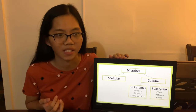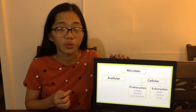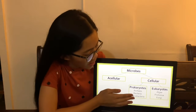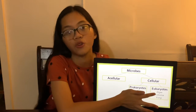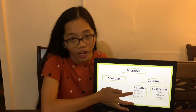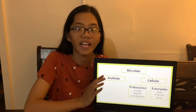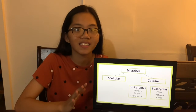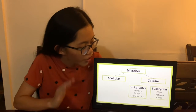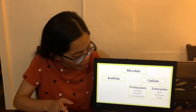Cellular can also be called microorganisms, and it is also divided into two: prokaryotes and eukaryotes. When we say prokaryotes, they lack a true nucleus. Under prokaryotes we have archaea, bacteria, and cyanobacteria.